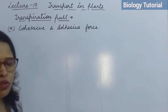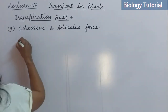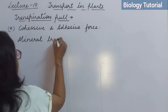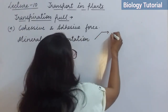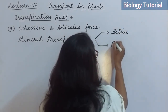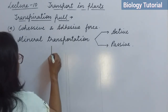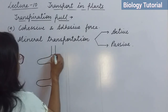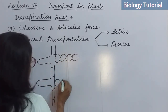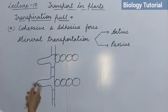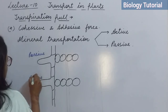The next topic is mineral transportation. Mineral transportation also takes place through xylem tissues. It takes place in two ways: first is active transport, and second is passive transport. To explain, consider a diagram of a root with epidermis and cortex cells, with soil on the outside.